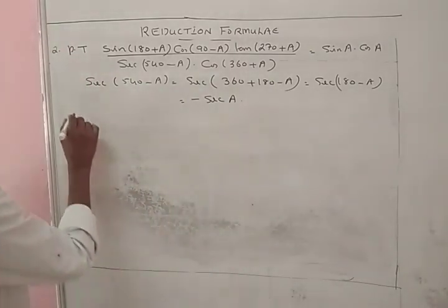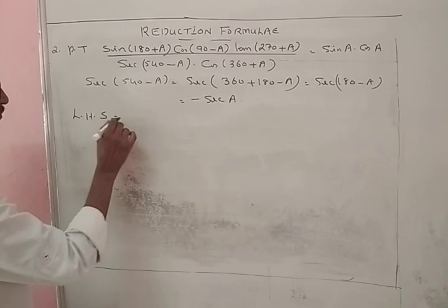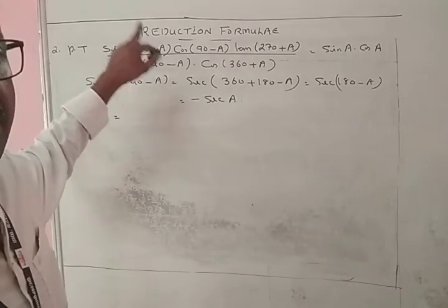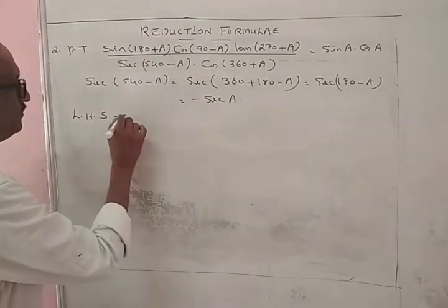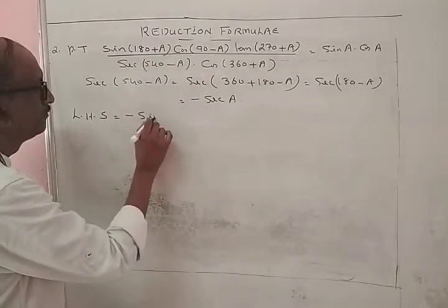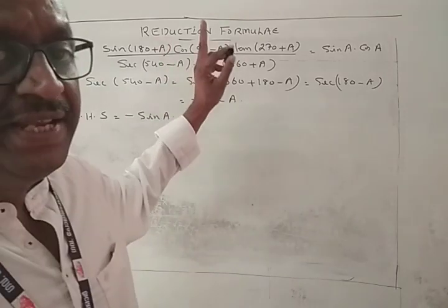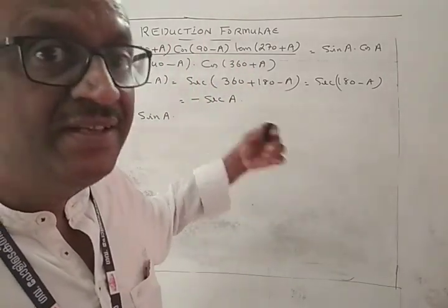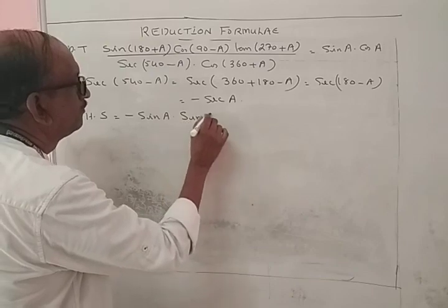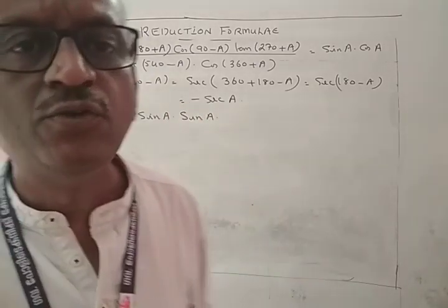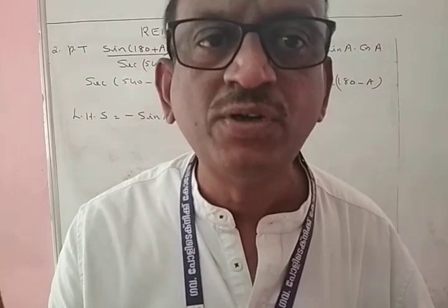Taking the left hand side: sin(180 + A) = minus sin A, cos(90 - A) = sin A, and tan(270 + A) = minus cot A.